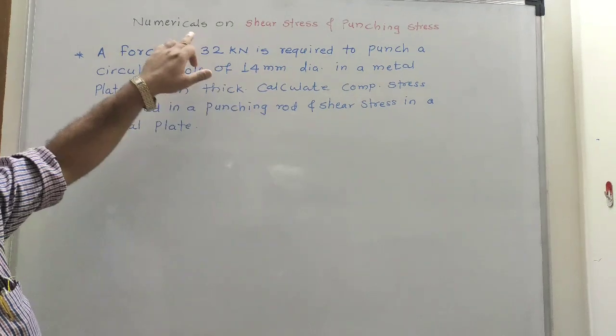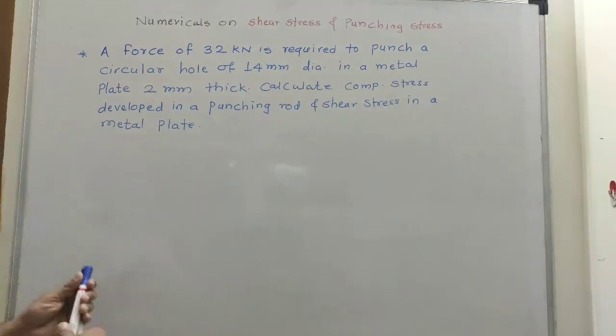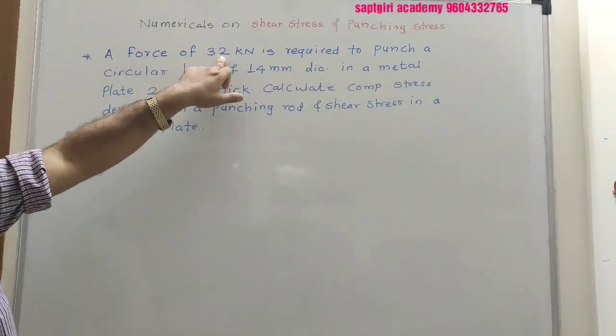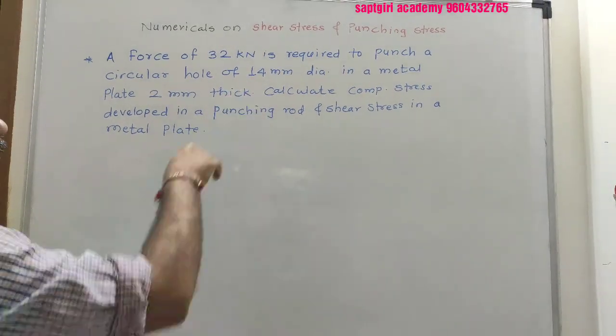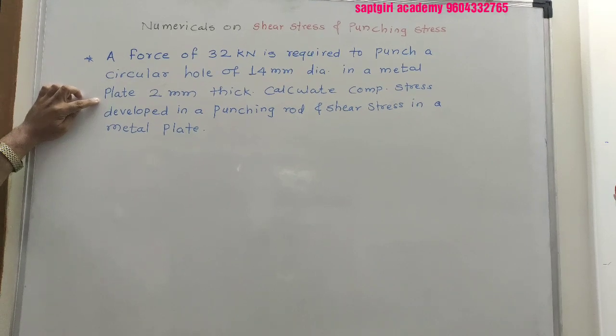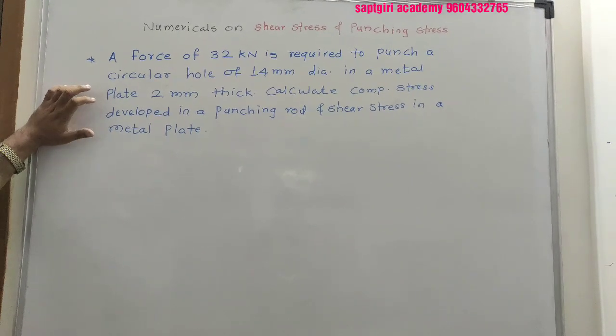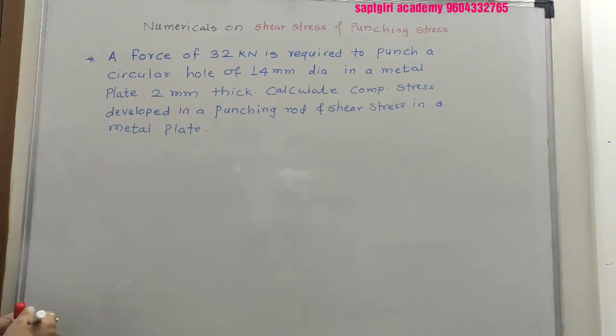Let us take an example on shear stress and punching stress. A force of 32 kN is required to punch a circular hole of 14 mm diameter in a metal plate 2 mm thick. Calculate compressive stress developed in the punching rod and the shear stress in the metal plate.